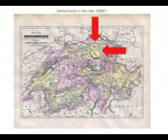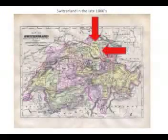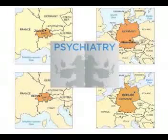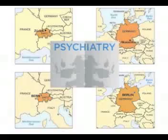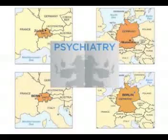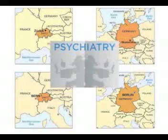The story begins in Zurich, Switzerland, where Hermann Rorschach was born on November 8, 1884. Rorschach was educated in a very intellectual area, inspired by Swiss psychiatrists. He studied medicine in Zurich, Nuremberg, Bern, and Berlin, and eventually specialized in psychiatry.